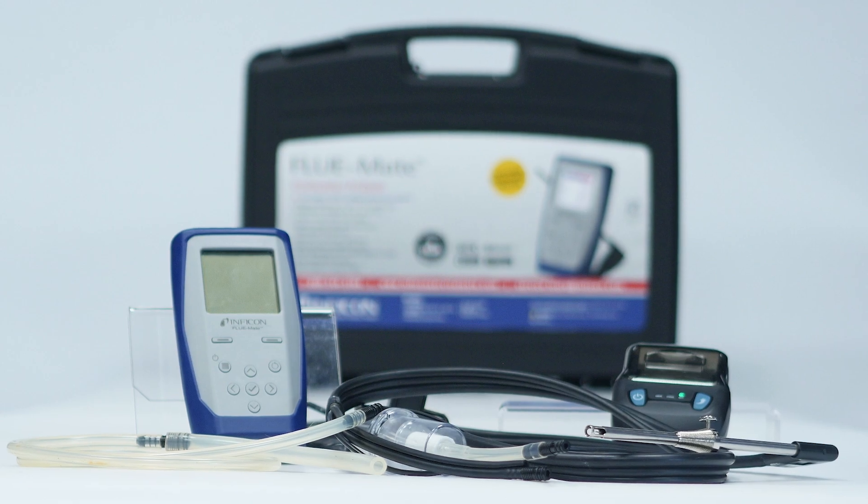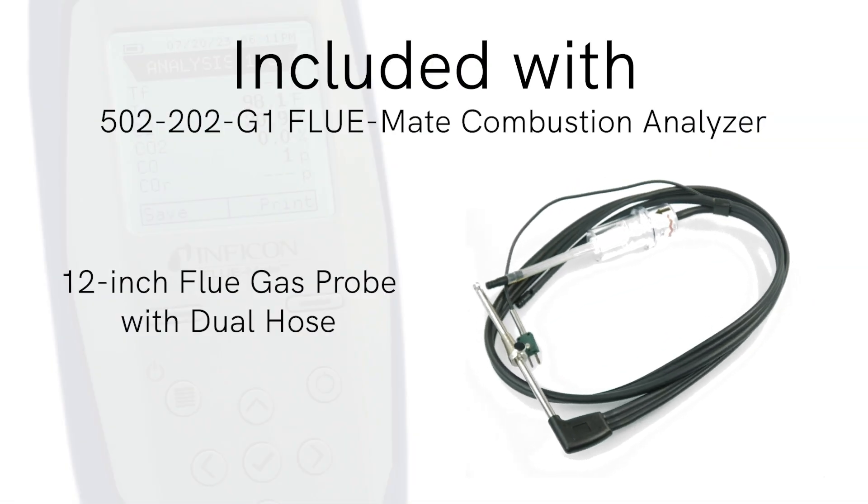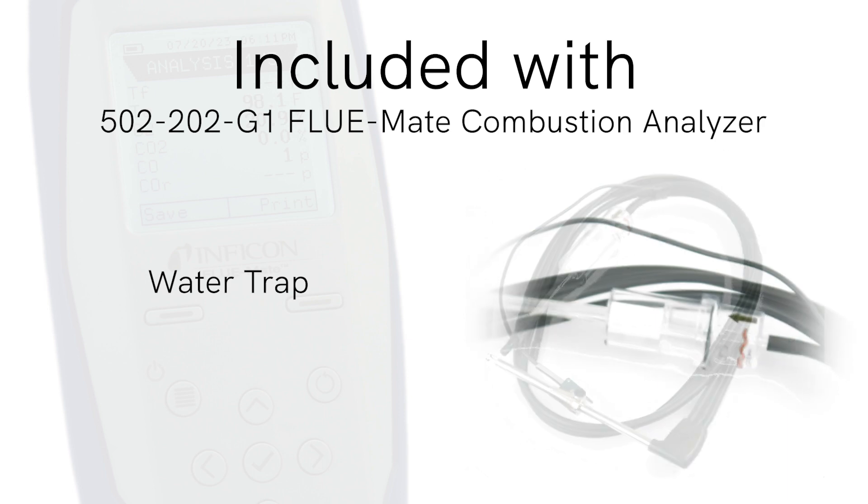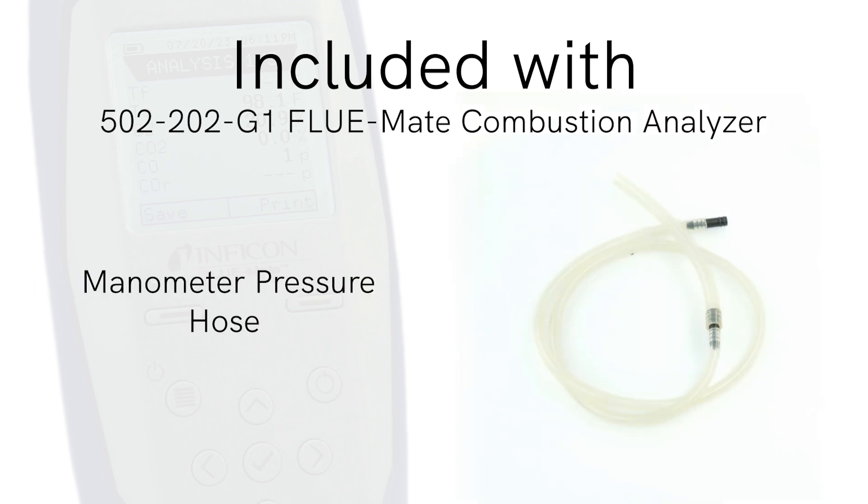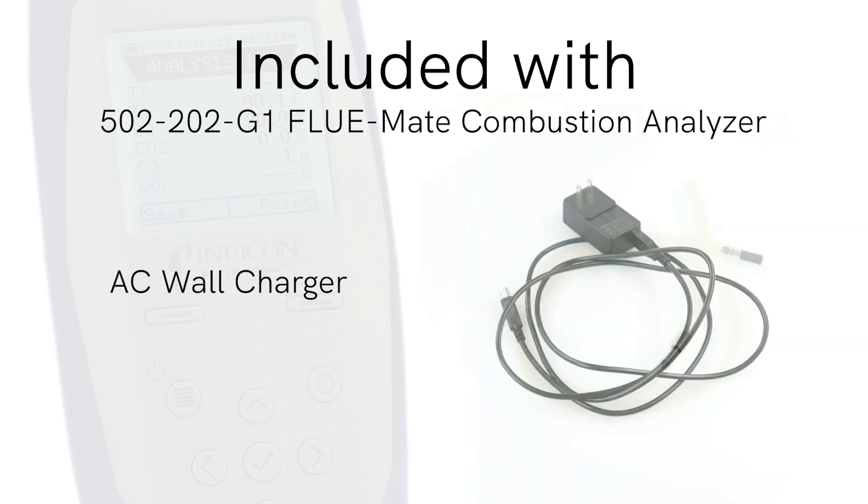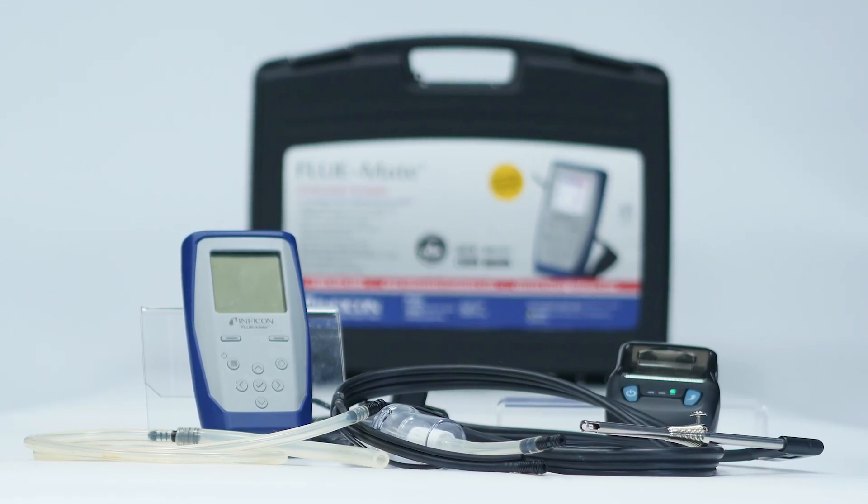Included with Flumate, you'll find a large 12-inch flue gas probe with a dual hose, water trap, manometer pressure hose, AC wall charger, and a hard plastic carrying case.